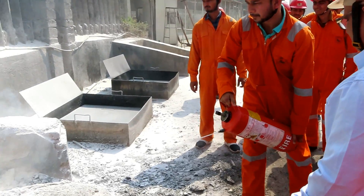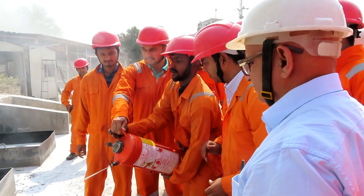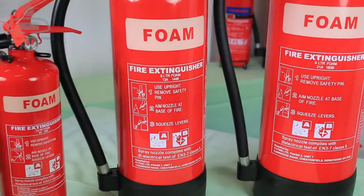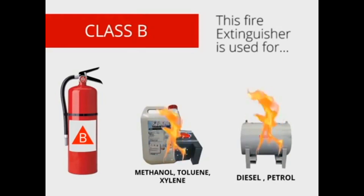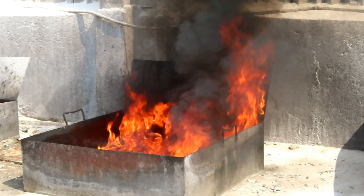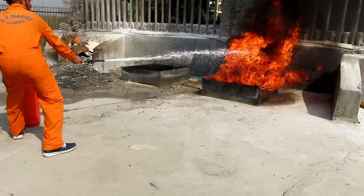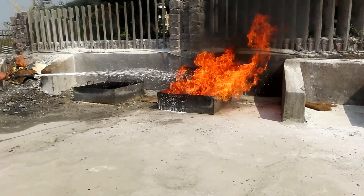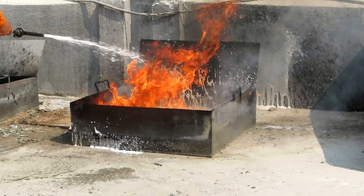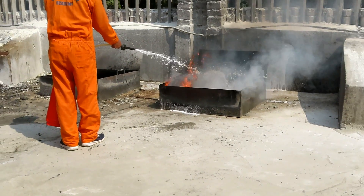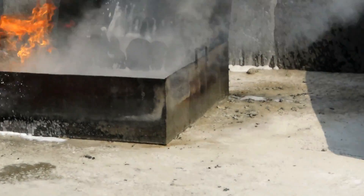The second one is a foam type extinguisher. This can be used on flammable liquids such as methanol, diesel, and petrol. It can also be used on Class A fires. Do not spray directly at the fire — this can cause it to spread to nearby surfaces. Direct the foam so it drops down and settles on top of the burning liquid.